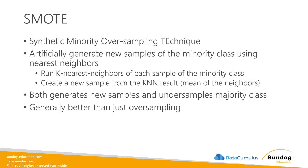Something even better than undersampling or oversampling is SMOTE — Synthetic Minority Oversampling Technique. What it does is artificially generate new samples of the minority class using nearest neighbors. Just like using KNN for imputation, we run K nearest neighbors on each sample of the minority class, then create new samples from those KNN results by taking the mean of those neighbors. So instead of naively making copies, we're fabricating new data points based on averages from other samples. It both generates new samples and undersamples the majority class, making it better than simple oversampling because the fabricated points still have some basis in reality.